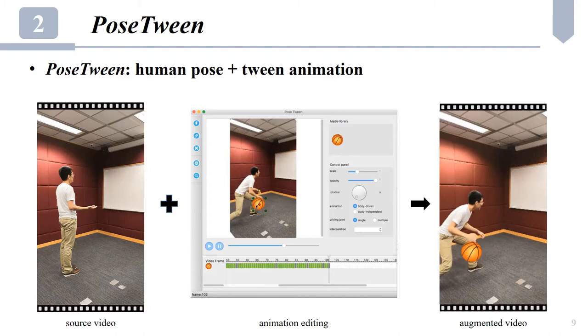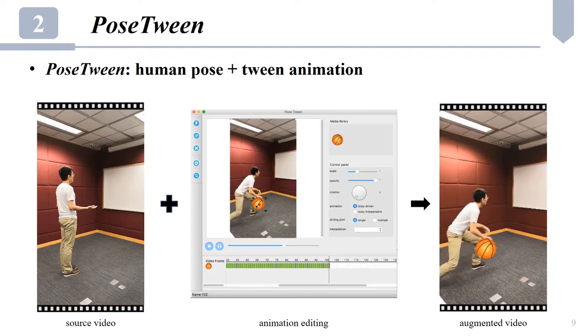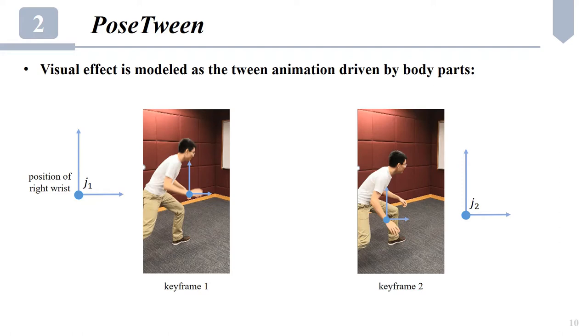Then, in the augmented video, the resulting animation of the virtual basketball is jointly determined by the human action and the user-specified animation. In the following, we explain the main idea of PoseTween animation.